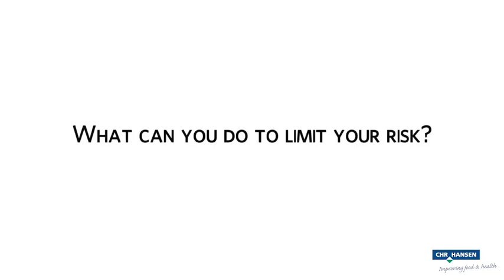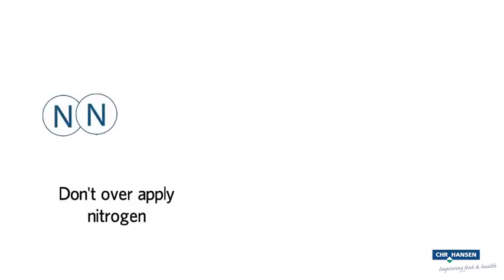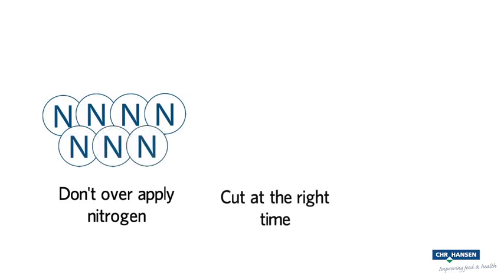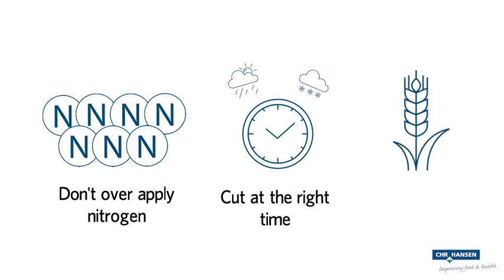So, what can you do to limit your risk? The first thing to do is not over-apply nitrogen. After that, consider when is best to cut. Not straight after the first rain shower after a long dry spell, and quickly after a frost or hailstorm. Also, as most nitrogen is held in the lower parts of the plant, consider a higher cutting height than normal, to leave as much nitrogen in the field as you can.